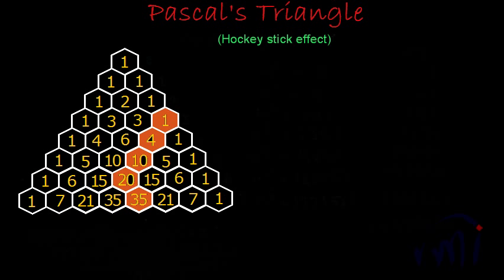So this is the hockey stick in Pascal's Triangle. There are only two things you have to remember while looking for this pattern. First, the hockey stick should always start from 1 — it should always start from either the first element of the row or the last element of the row. And the bend at the end of the hockey stick should be in the direction from where you are starting. In this particular case, we are starting from the right side of the triangle, so this bend is also towards the right.